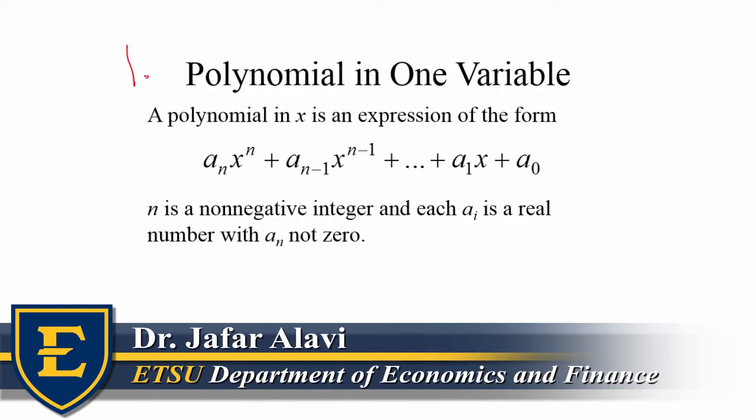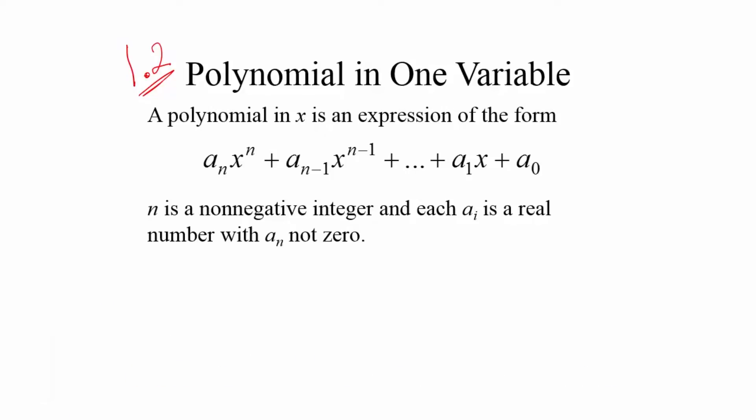Section 1.2: Polynomials in One Variable. For most of the course we stay with one variable, which in this chapter is X. A polynomial in X is an expression of the form a_n·X^n + a_(n-1)·X^(n-1) + ... + a_1·X + a_0, where n is a non-negative integer and each a_i is a real number, with a_n not equal to 0.